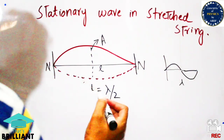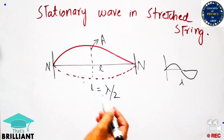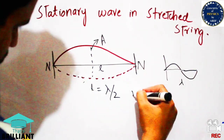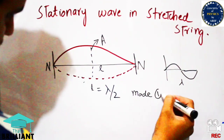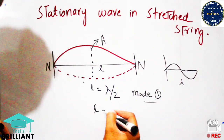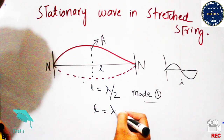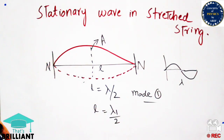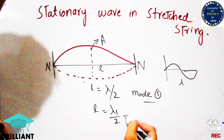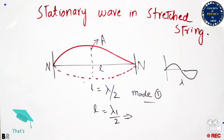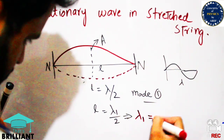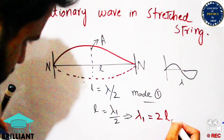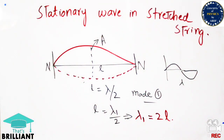From this we can say that lambda is equal to 2l. This is Mode 1. In Mode 1, we write l is equal to lambda₁ over 2, which gives us lambda₁ is equal to 2l.